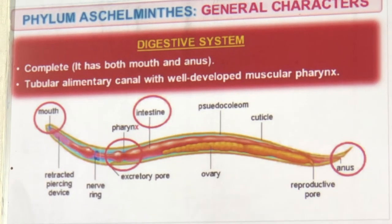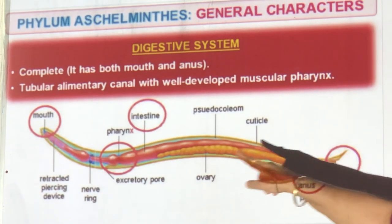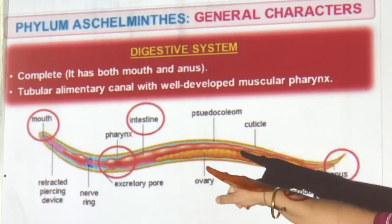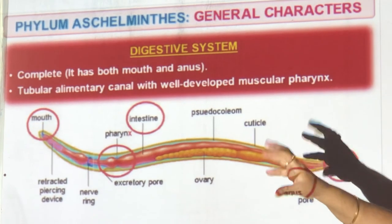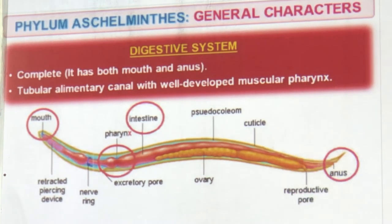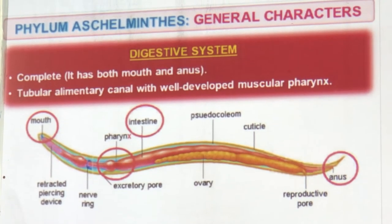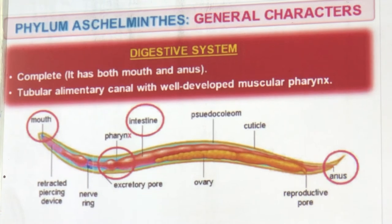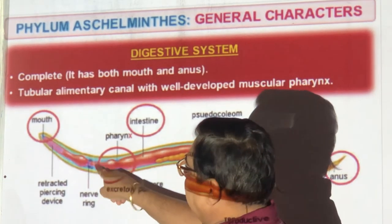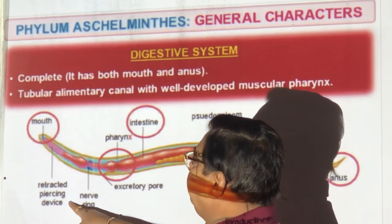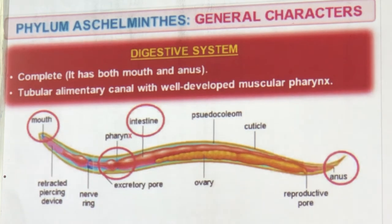For the first time the digestive system is complete — mouth, anus, and a tube (alimentary canal) are present. A well-developed muscular pharynx is used to swallow and move food. Ovaries, reproductive pore, and reproductive organs are present. A nerve ring is also present. Some have a piercing device to make holes and remove blood and food from inside the host.